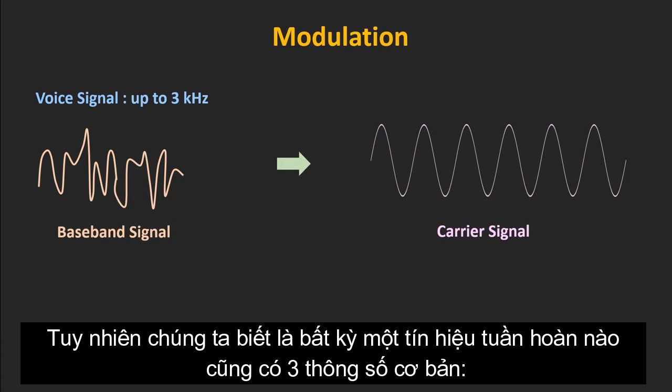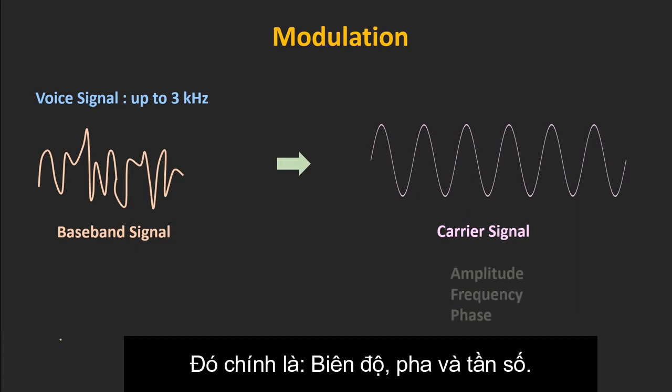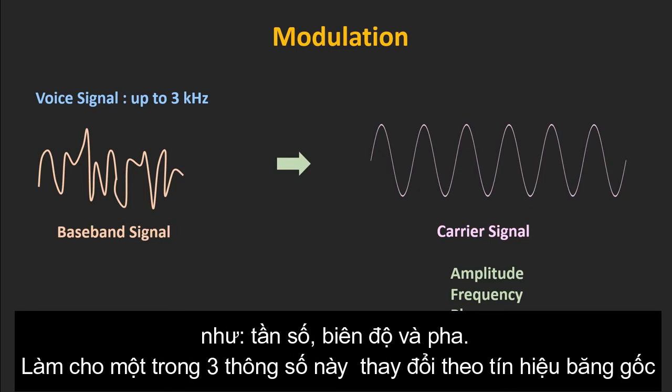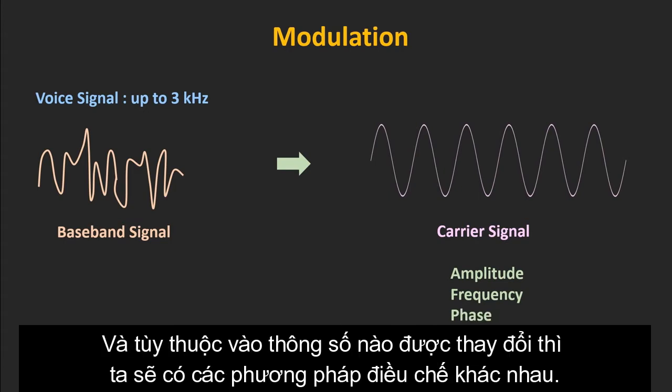Any signal has three basic properties: amplitude, phase, and frequency. Modulation is the process where one of these properties of the carrier signal — like the amplitude, phase, or frequency — is changed according to the baseband signal. And based on which property is changed, there are different types of modulation.